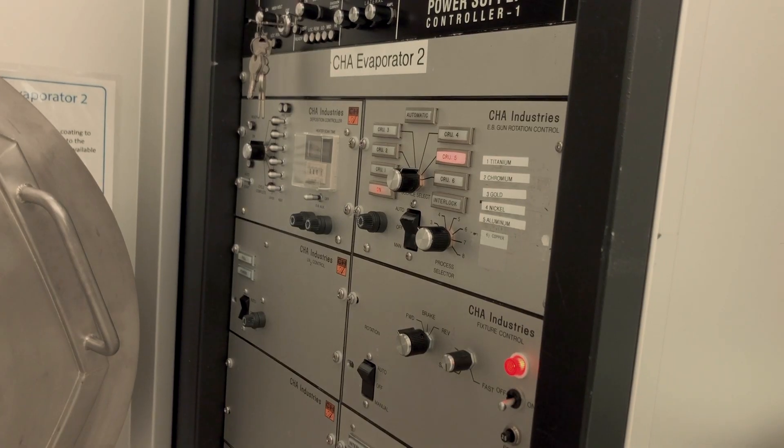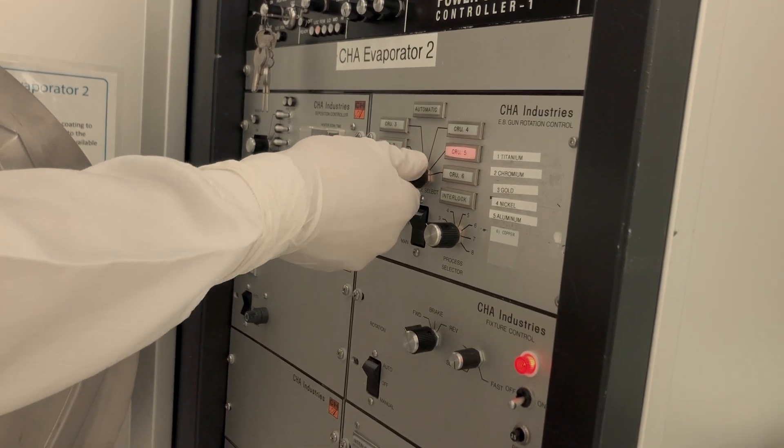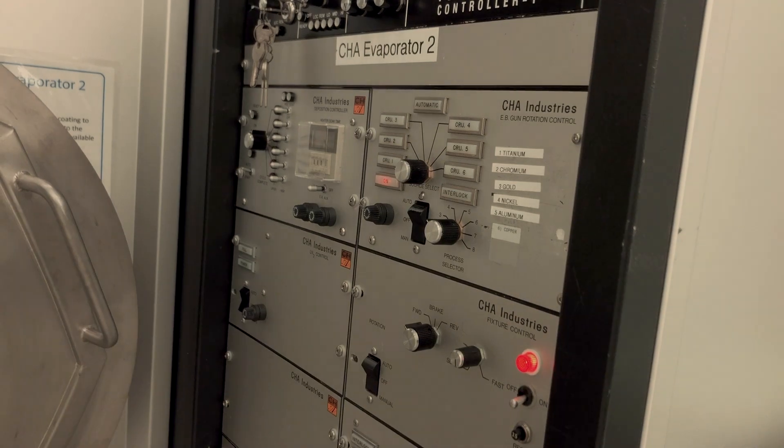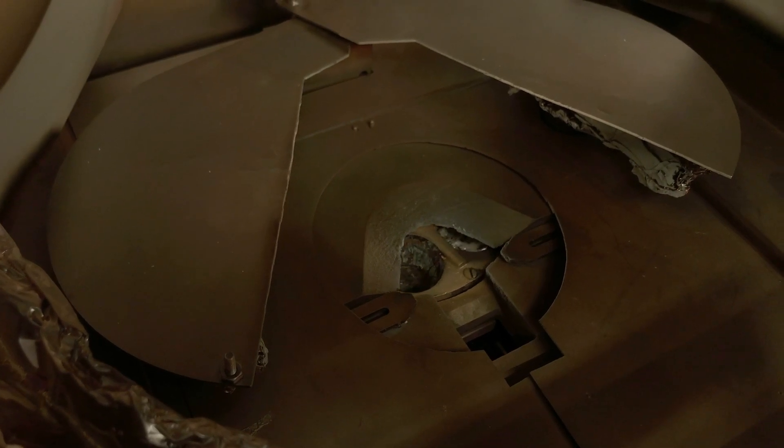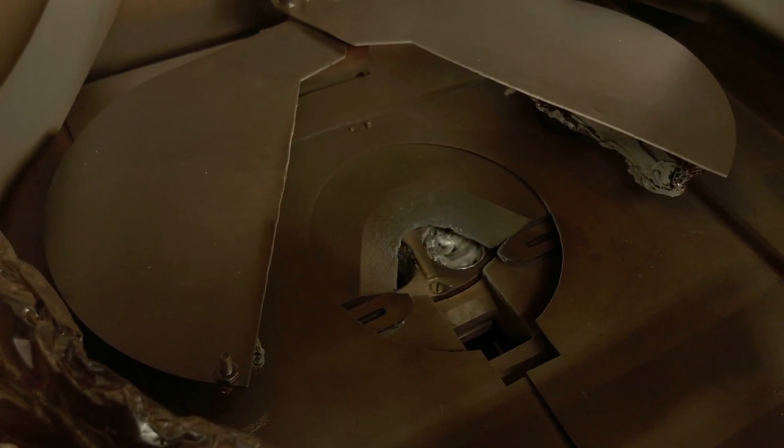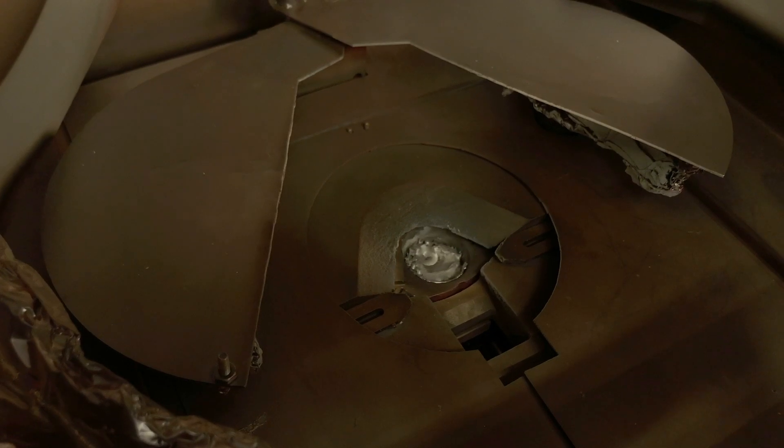You should now select the metal you will be using for your process run. You can select the crucible by turning the source selector knob on the gun rotation control. The rocker switch should be set to manual position in order to manually select the desired crucible. Turn the source selector knob to the first metal you will be using.